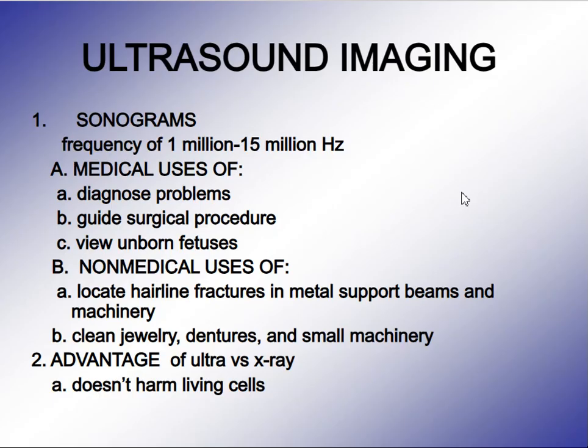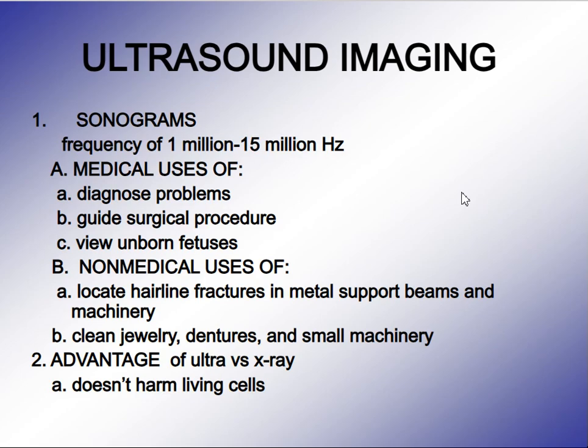Ultrasound imaging uses sonograms at a frequency of 1 million to 15 million hertz. Medical uses include diagnosing problems, guiding surgical procedures, and viewing an unborn fetus. Non-medical uses include locating hairline fractures in metal support beams and machinery, and cleaning jewelry and small machinery. An advantage of ultrasound over X-ray is that it does not harm living cells.